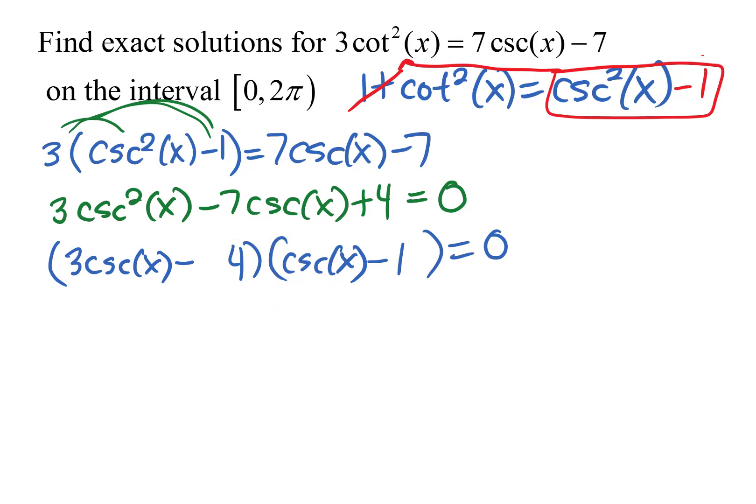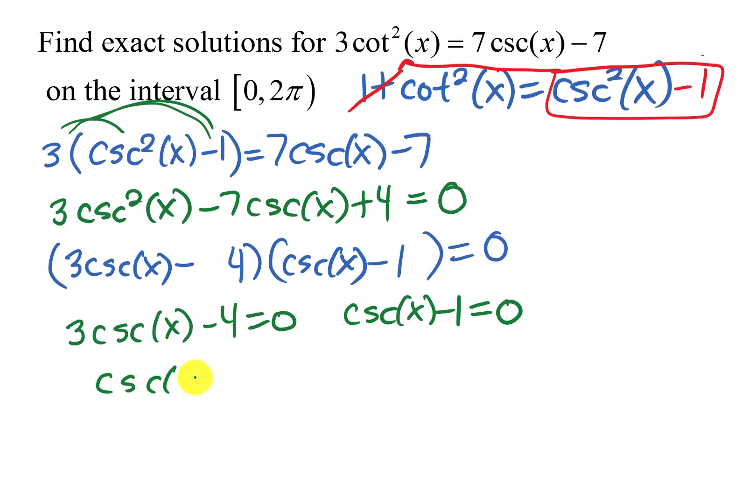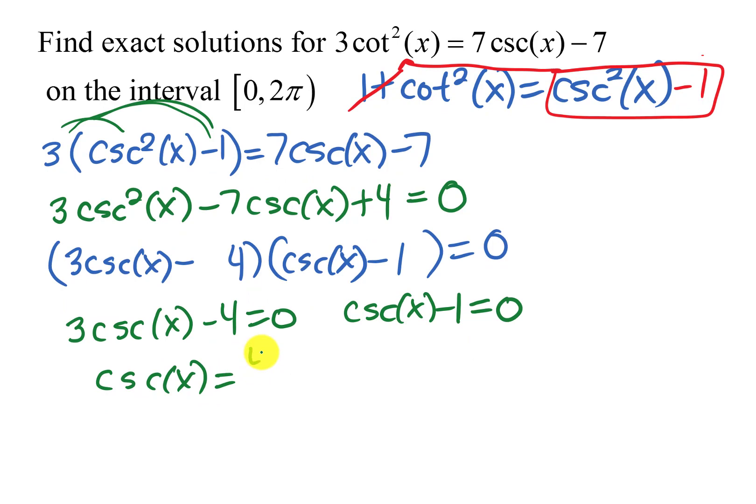Now I use the zero factor property and I set each factor equal to 0 and solve it. So I have 3 cosecant x minus 4 equals 0 and cosecant x minus 1 equals 0. So getting the cosecant x by itself, that would give me 4 thirds and getting cosecant x by itself here, that would give me a 1.